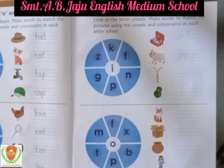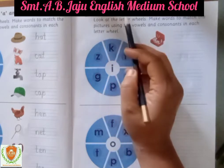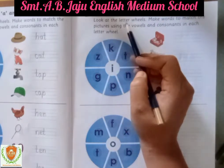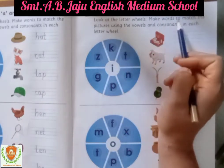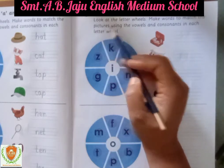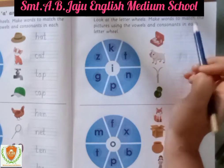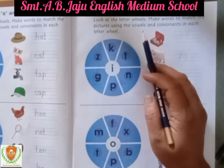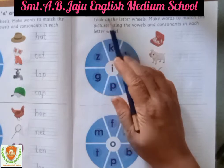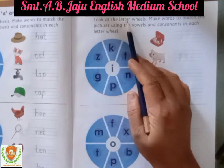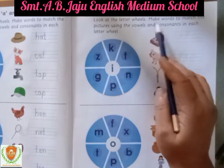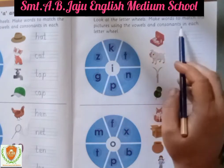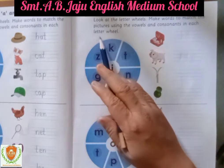On the next page, page number 25. Letter wheels — I sound and O sound. Look at the letter wheels. Make words to match the pictures using the vowels and consonants in each letter wheel.